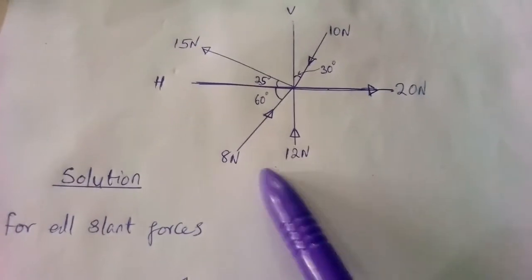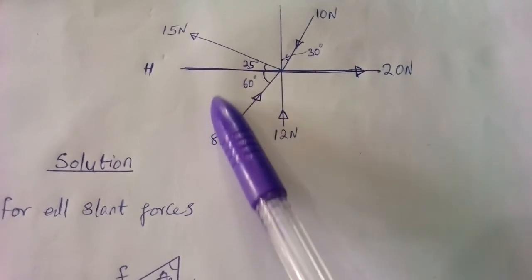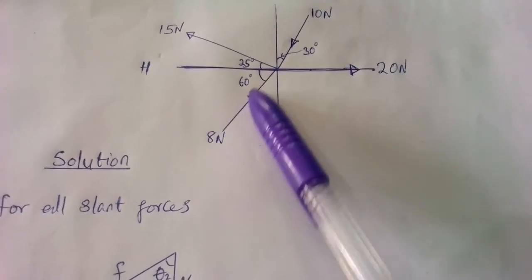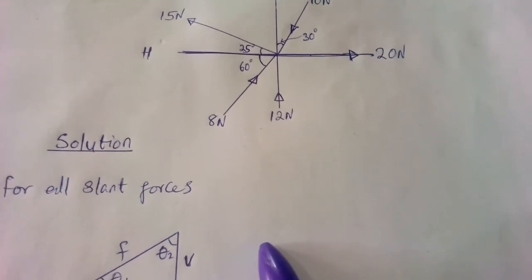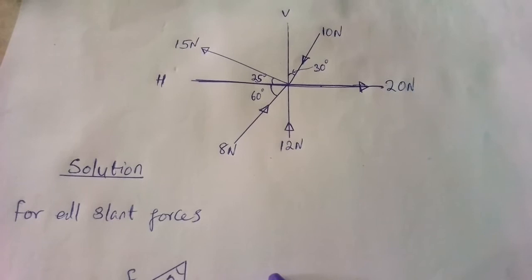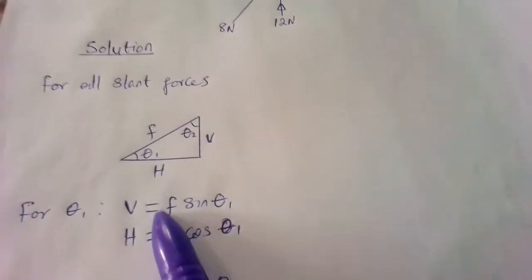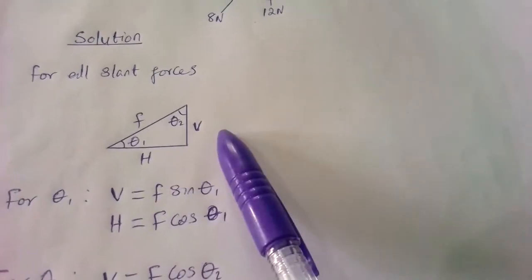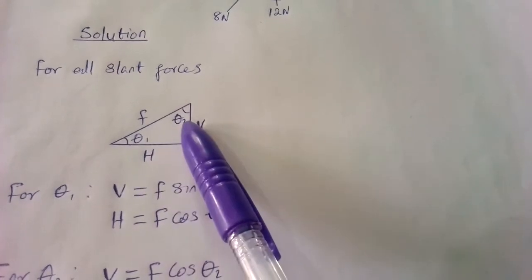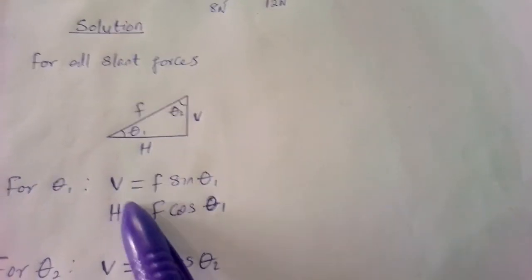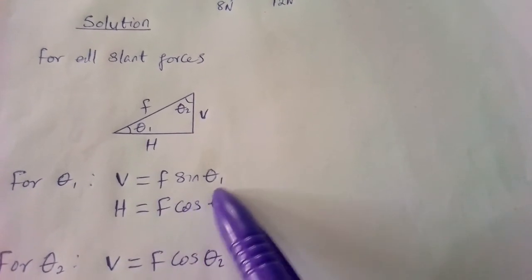Looking at our slant force — for example the one of 8 Newton — the angle is here, so we can form a triangle in this direction. By forming a triangle we will be able to get our horizontal and vertical components from the slant force. In the triangle we have vertical here, horizontal here, and the given force as the hypotenuse. We have two angles, and these angles are used to show which trigonometric function we are going to use.